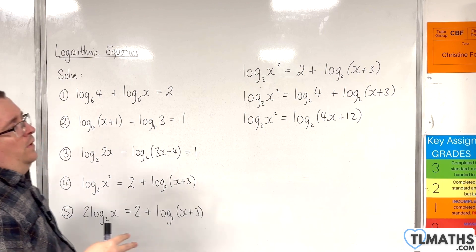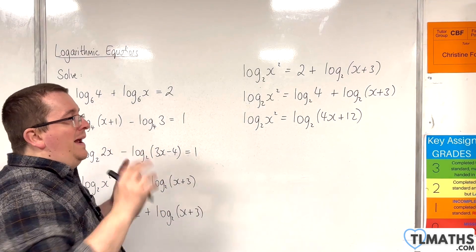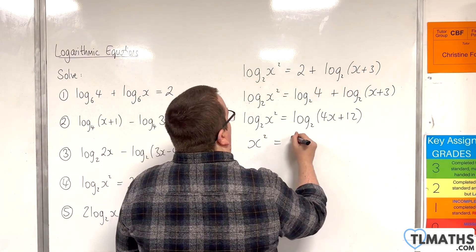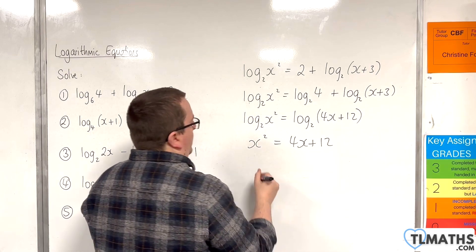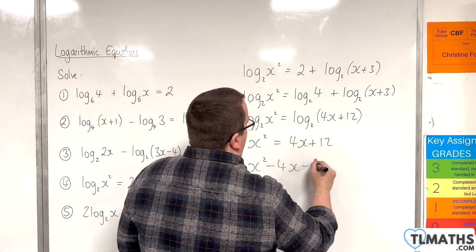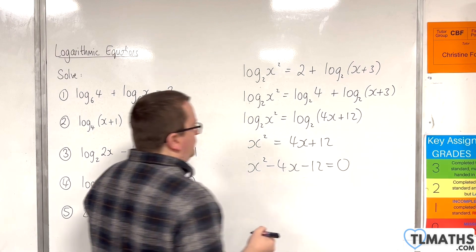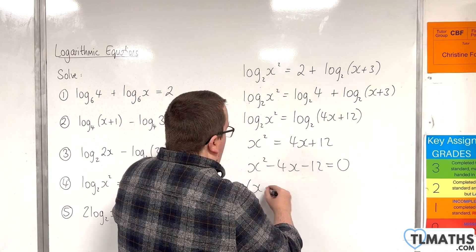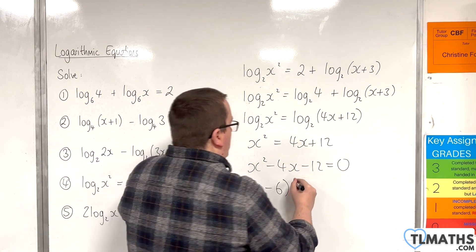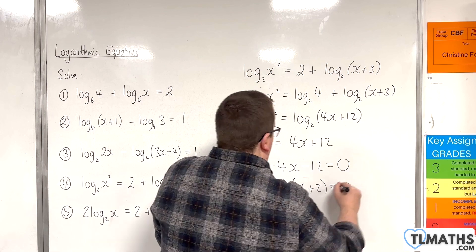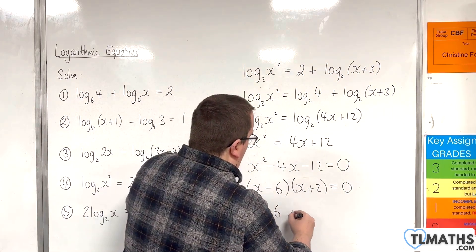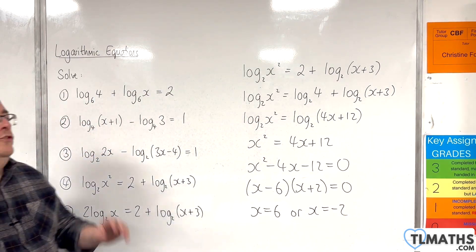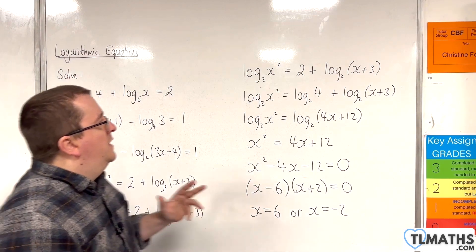Now we can raise 2 to the power of both sides to remove the logarithms. So we'll have x squared is equal to 4x plus 12. Get it all onto one side of the equation, and we can factorise that to get (x minus 6)(x plus 2) is equal to 0. So x equals 6 or x equals minus 2. Now you must check — do they solve the original equation?